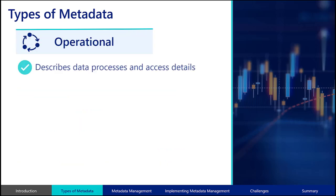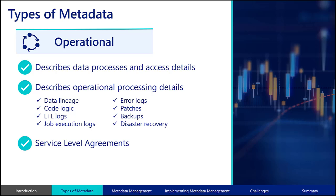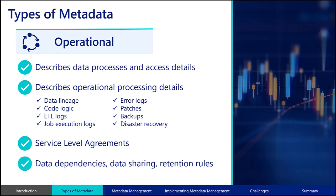Operational metadata describes the data's process and access details. This type of metadata includes the operational details of data lineage, code logic, ETL logs, job execution logs for batch programs, error logs, patches, backups, disaster recovery, and other processing information. Operational metadata may also include service level agreement requirements and information on data dependencies, data sharing rules, and retention rules.